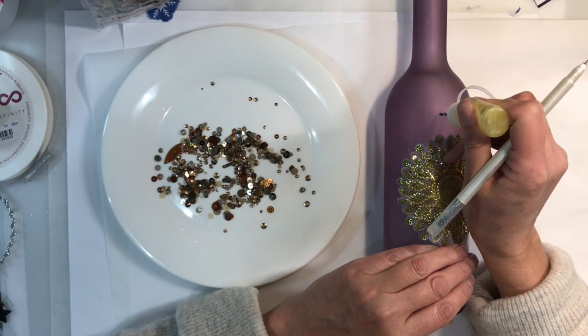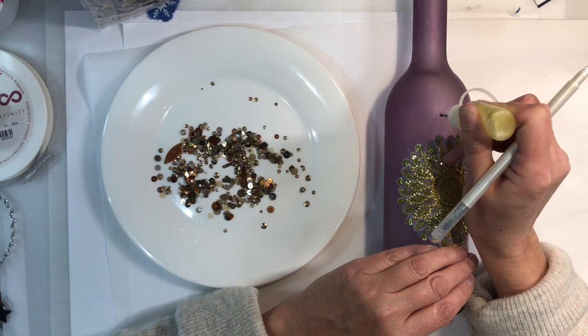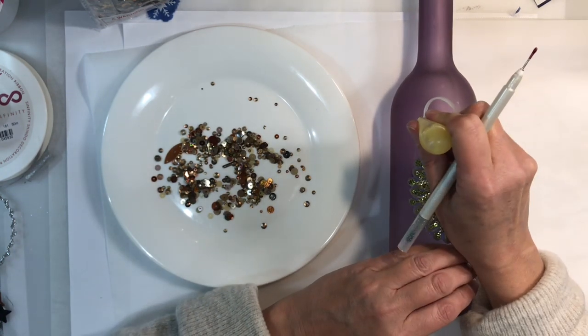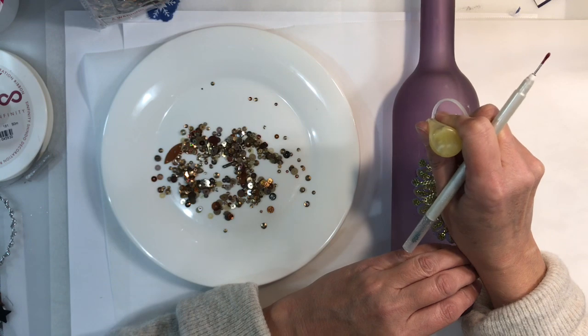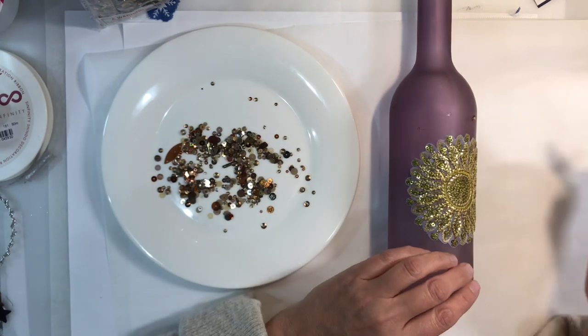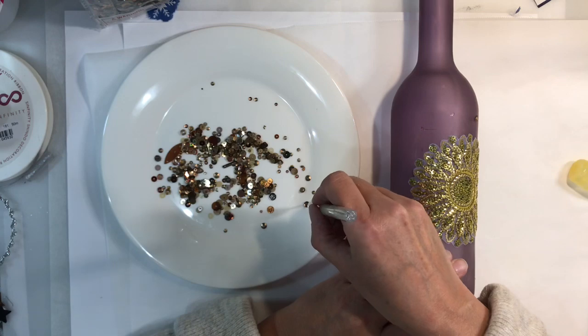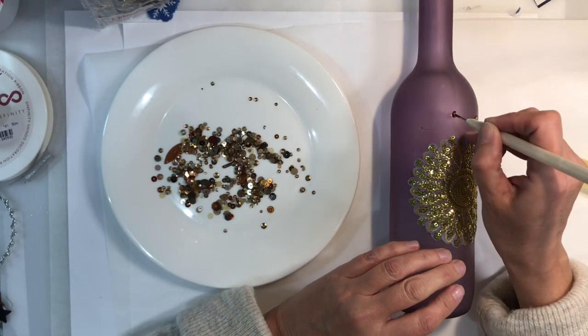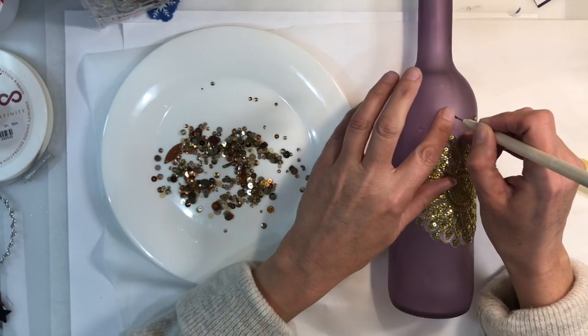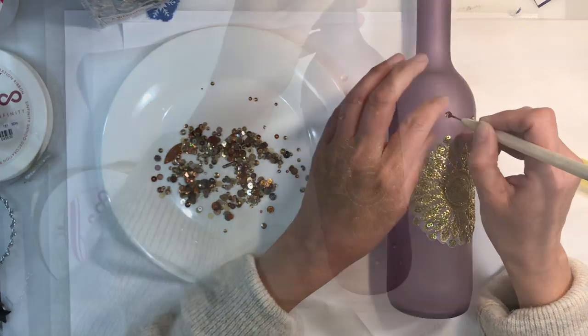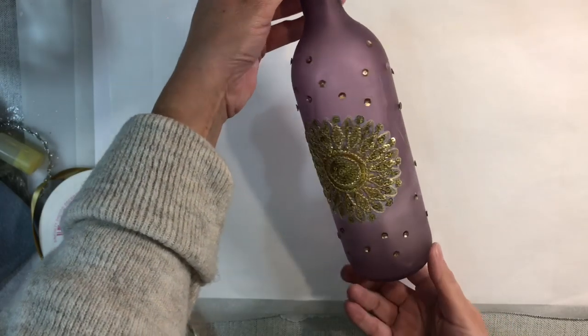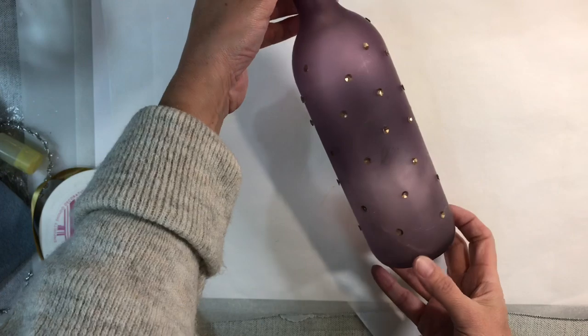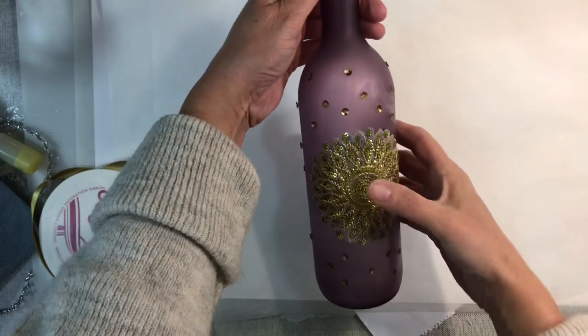I'm going to try and be really random about this all over the background of the bottle. The good thing about Fabri-Tac as well, if I get a few odd strings, which you can see I've got here, it doesn't matter because we can just peel it off once it's dry. So I've glued all my sequins on and that's how that looks. Really really pretty. That's so effective.